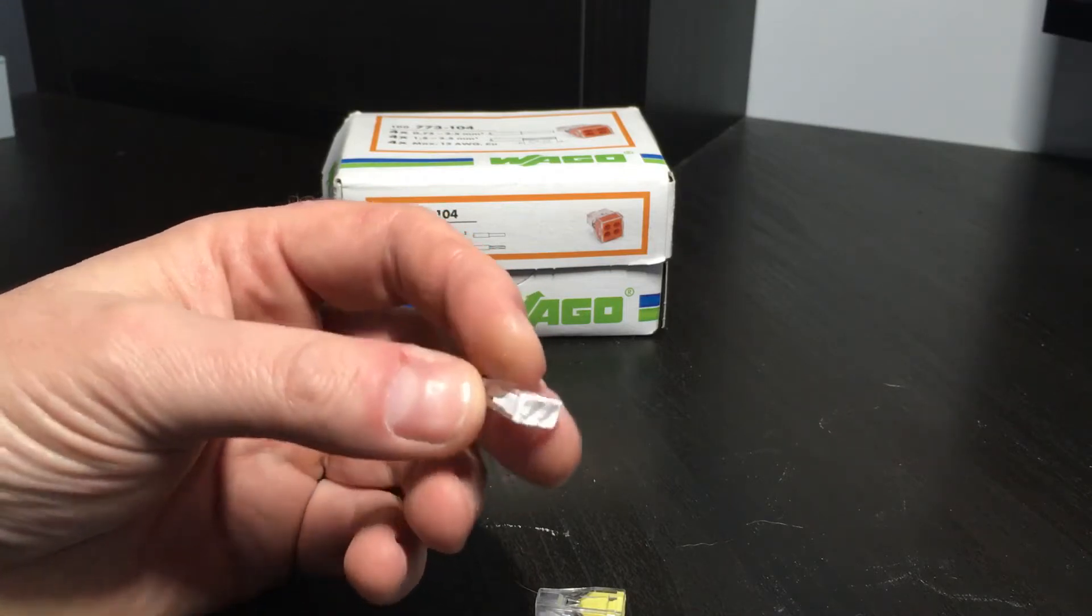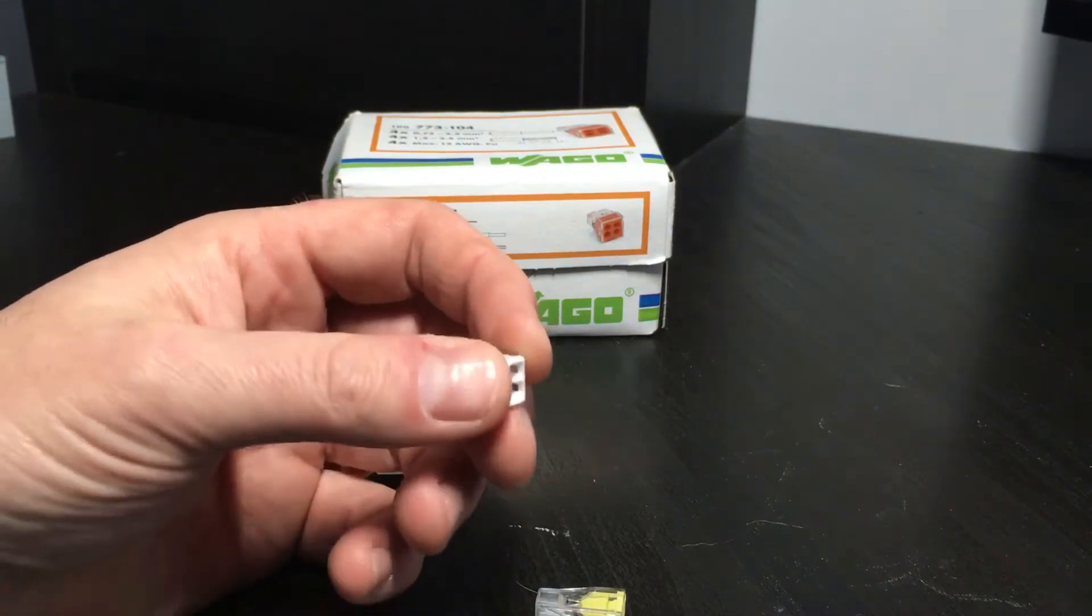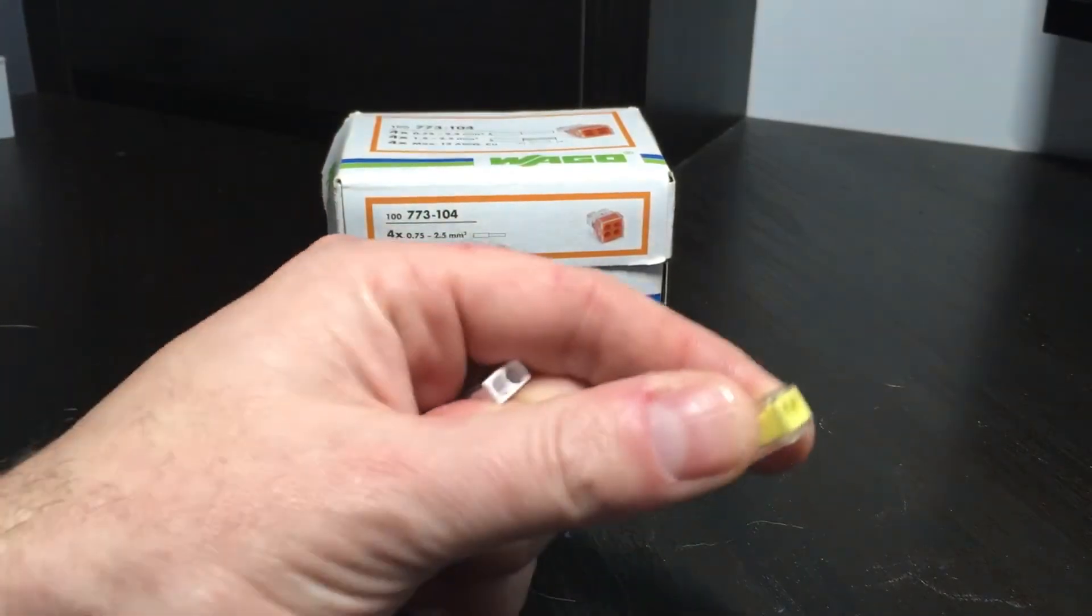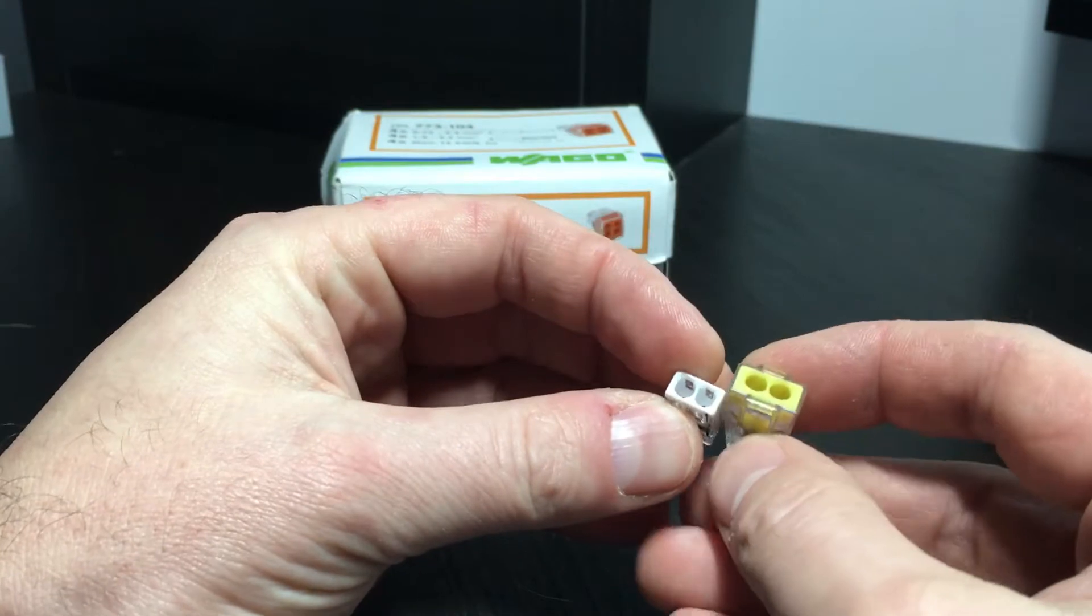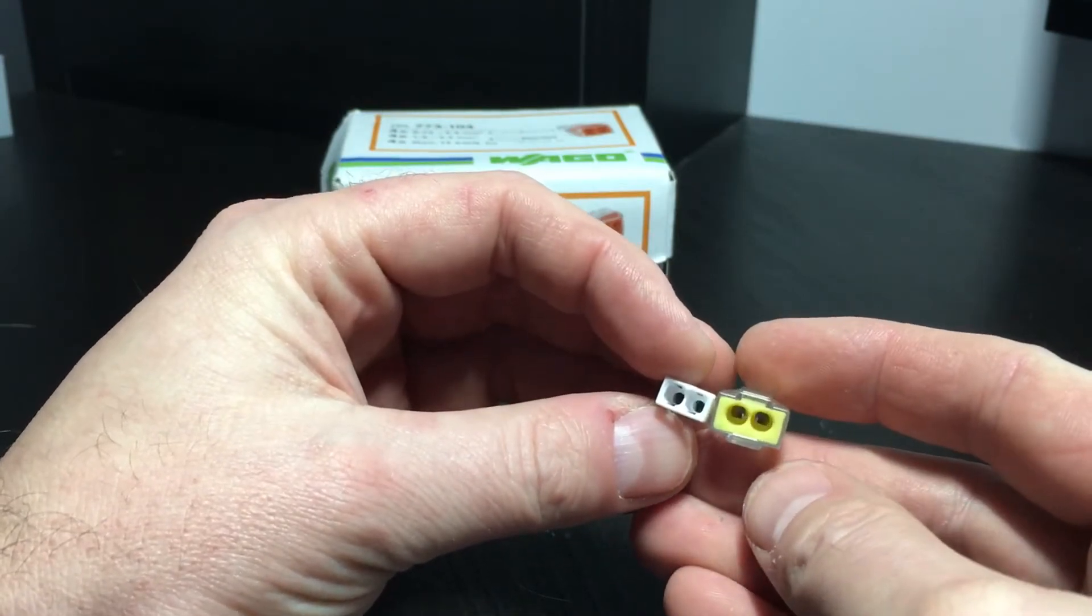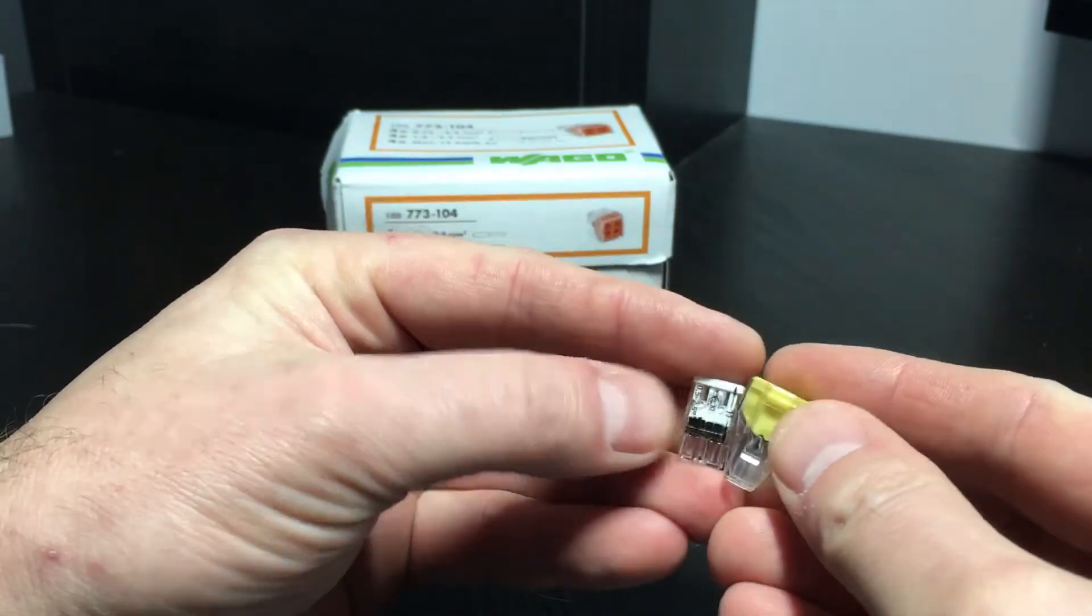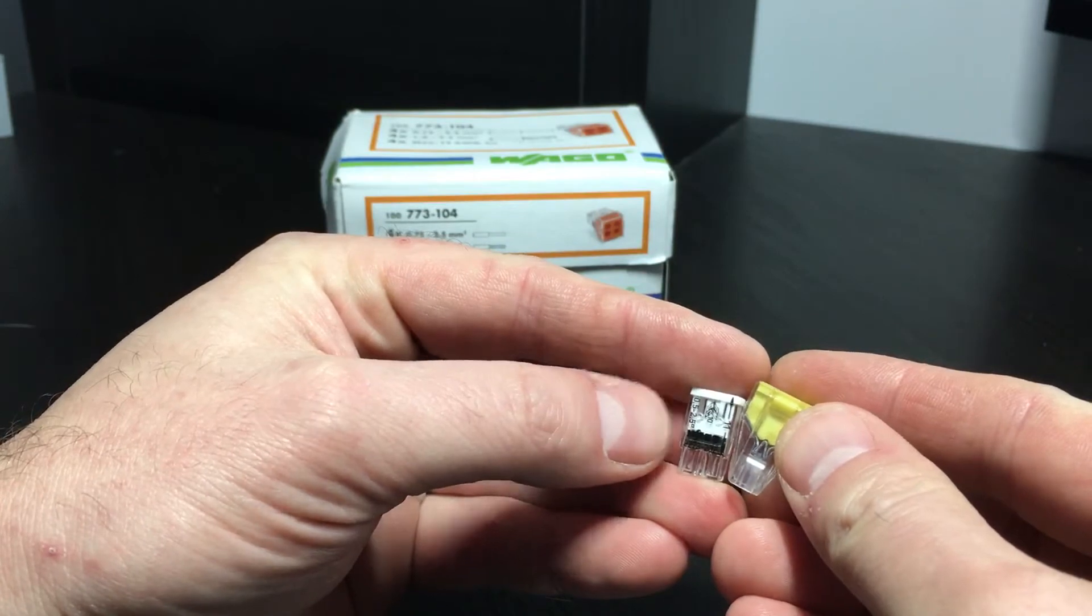Smaller areas such as behind switches where you need to loop in and out, maybe with a neutral or a live, and room is a bit short. As you can see, both these connectors are rated at 24 amps, but one is quite a bit smaller than the other, like I said, for tighter spots.